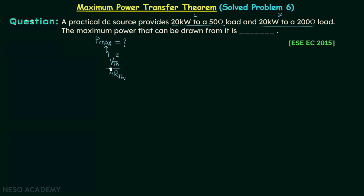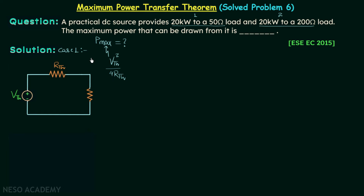Let us find Vth and Rth. We will consider case number 1 using the Thevenin equivalent circuit, where Vth and Rth are unknown. RL is equal to 50 ohms, and we assume the current through RL to be I1.